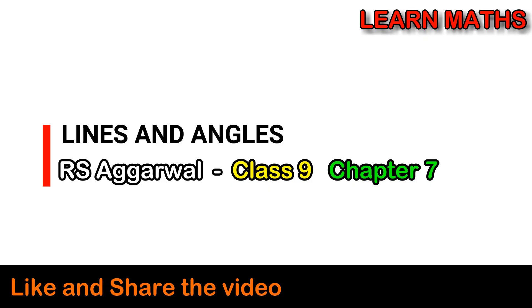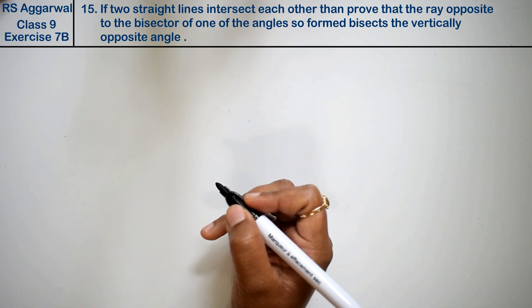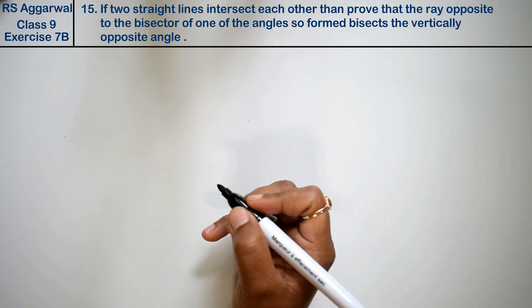Let's do question number 15 of exercise 7B, that is lines and angles. Question number 15 is: if two straight lines intersect each other, then prove that...